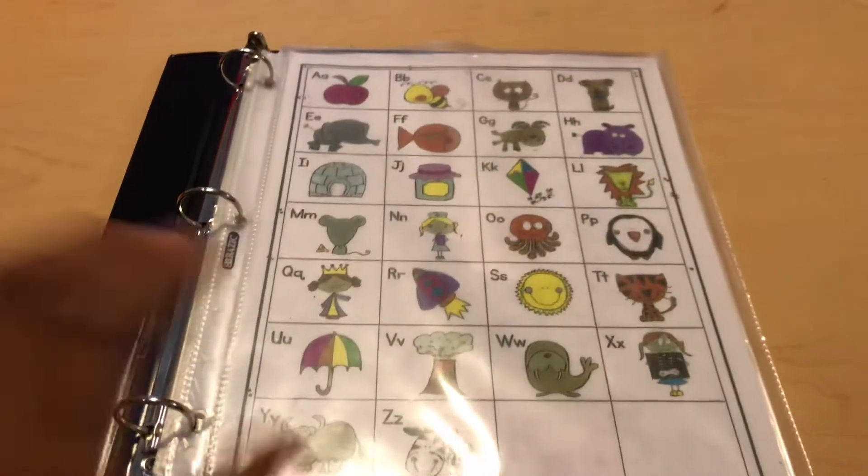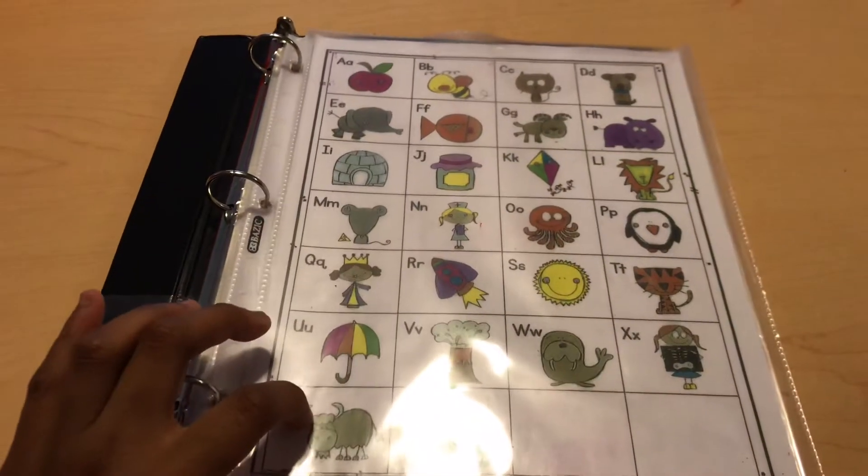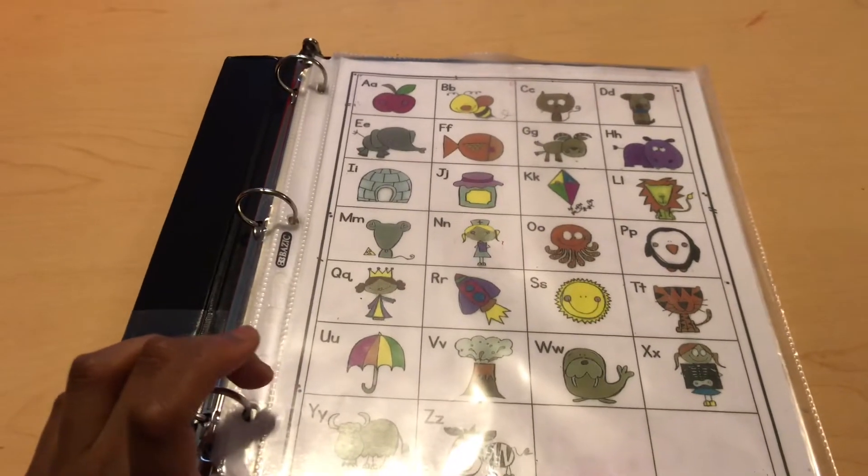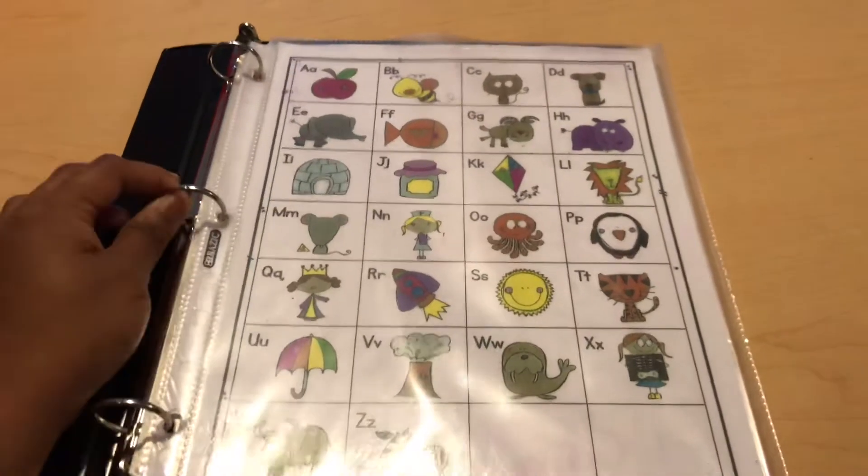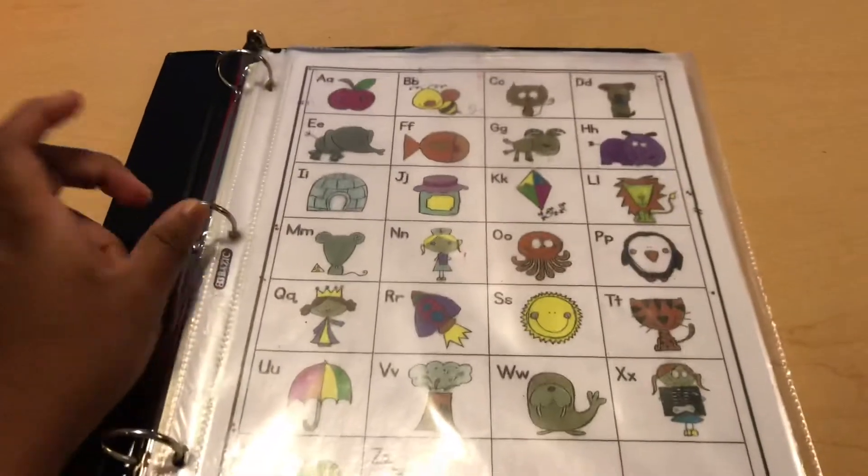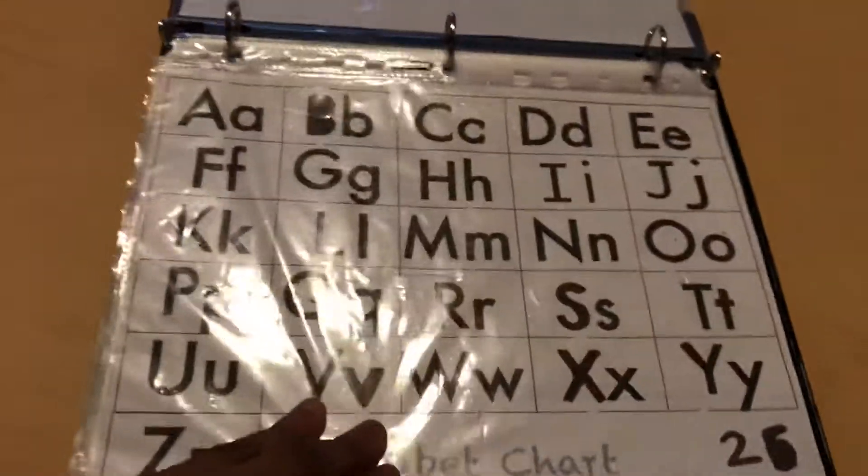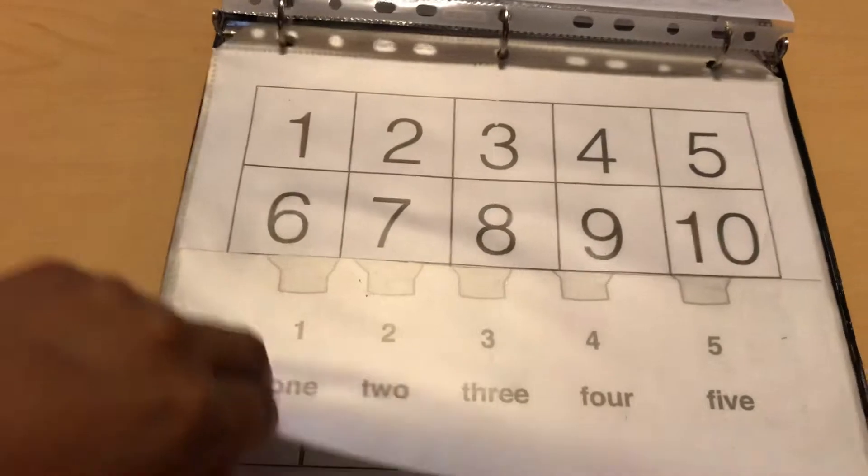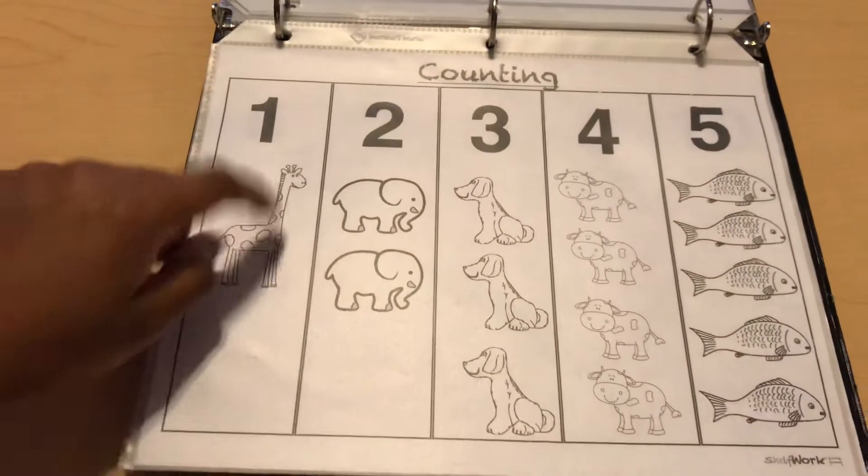This is the letter sounds that we do. I got this paper from the twins when they brought home all their stuff from public school. I guess they use this in public school and I am using it with her for her letter sounds. So we just go over her letter sounds every single day. This is her letters. This is her numbers, counting with fingers, counting objects all the way to ten.